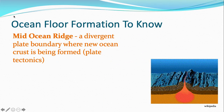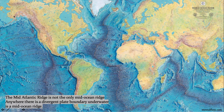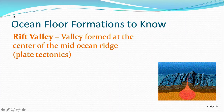The mid-ocean ridge, which we talked about in the plate tectonics unit, is a divergent plate boundary where new ocean crust is being formed, and that's formed by plate tectonics. The mid-ocean ridges cover the planet. There's the mid-Atlantic ridge between us and Europe and Africa, but that's not the only ridge. Anywhere where there's a divergent plate boundary underwater is a mid-ocean ridge. A rift valley is the valley formed at the center of the mid-ocean ridge, also formed by plate tectonics.